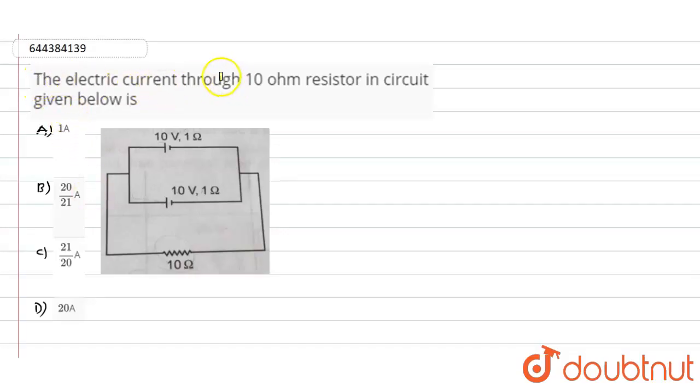So guys, in this question it is given that the electric current through 10 ohm resistor in the circuit given below is... If you look into this particular figure we have the 10 ohm resistor here and we have two voltage sources for this resistor in the circuit.